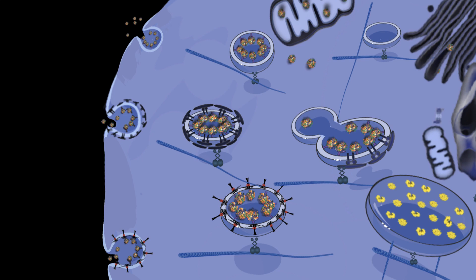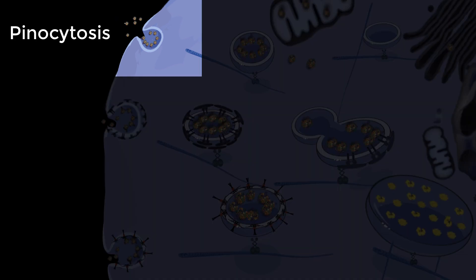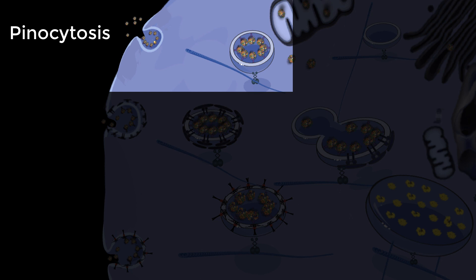Endocytosis is a type of active transport that moves larger molecules, particles, and even cells into the cell. Pinocytosis is a spontaneous and non-specific endocytotic process. We refer to it as cell drinking.